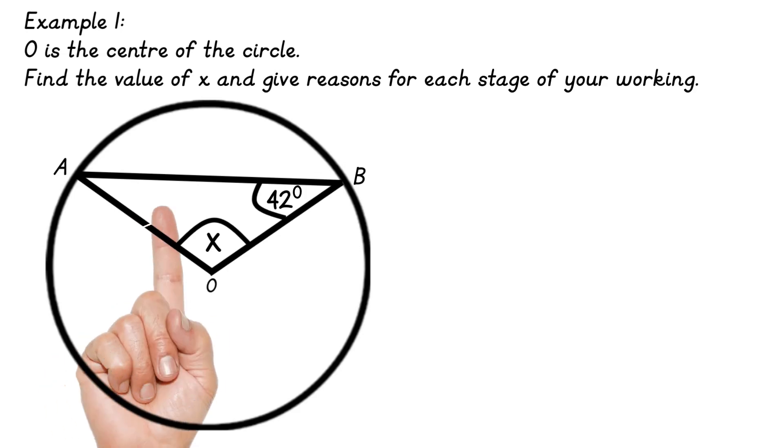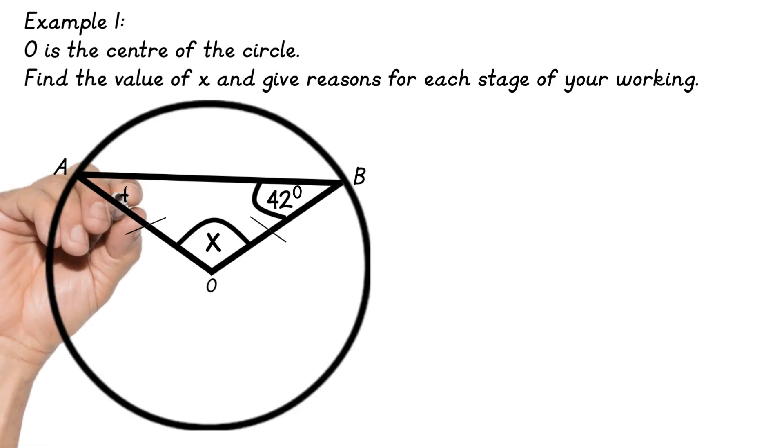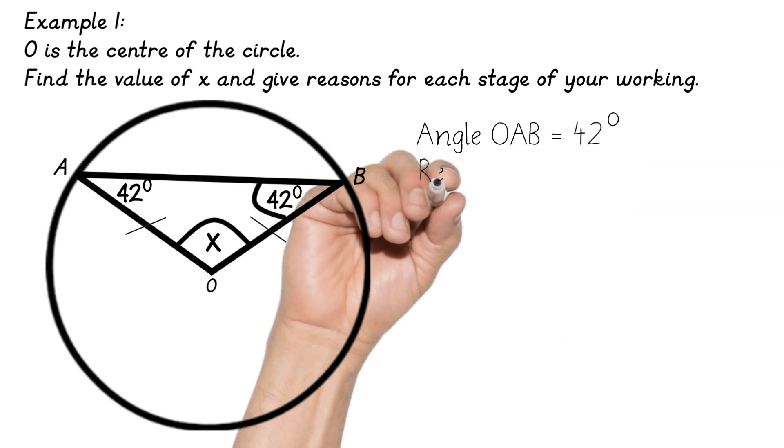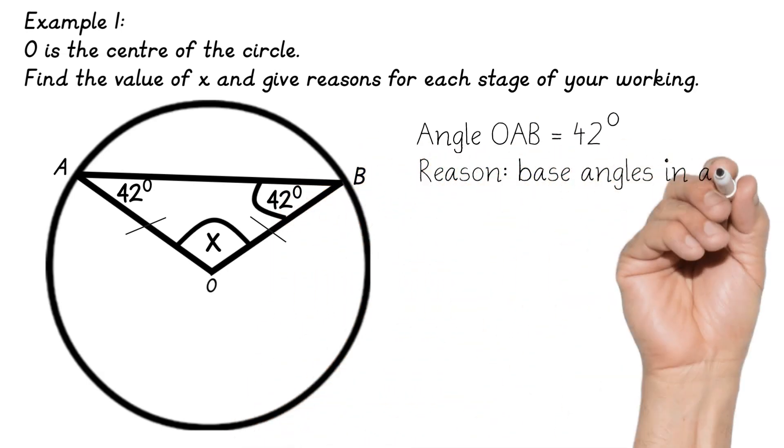So that means that angle OAB is also 42 because that's a base angle like the one on ABO. So I'm going to write that down because the question says give reasons for each stage and I don't want to forget these reasons. So angle OAB is 42 and the reason is that base angles in an isosceles triangle are equal.